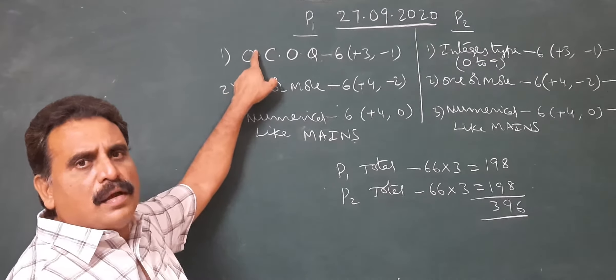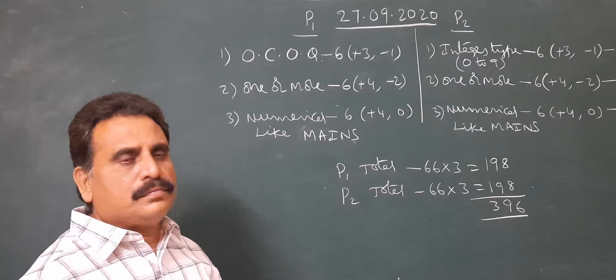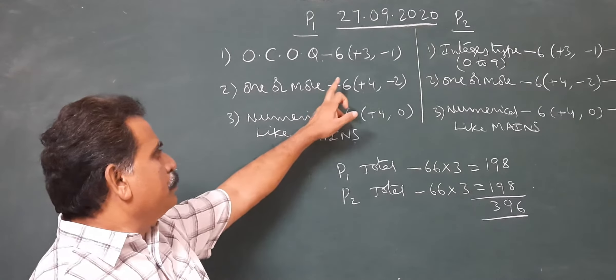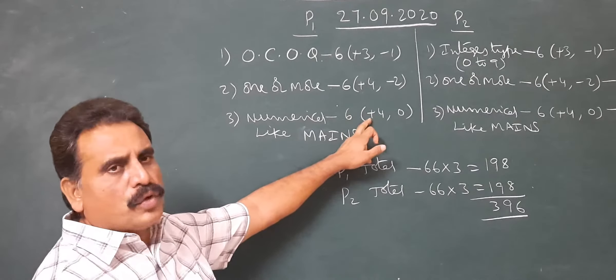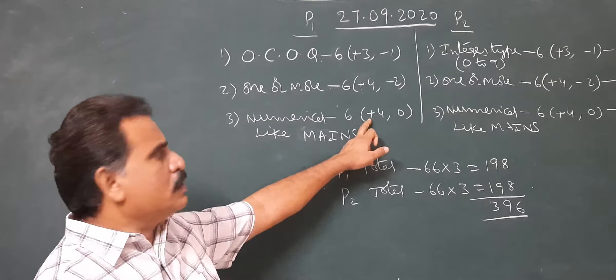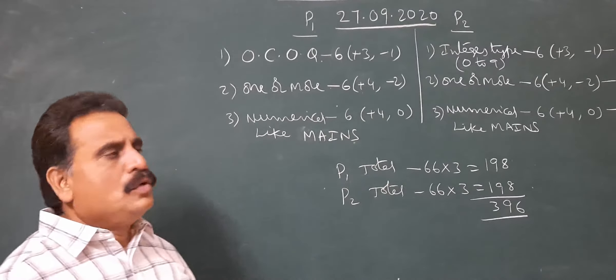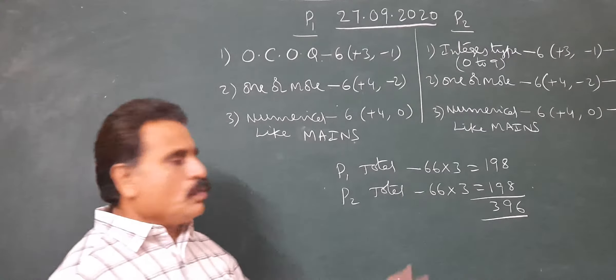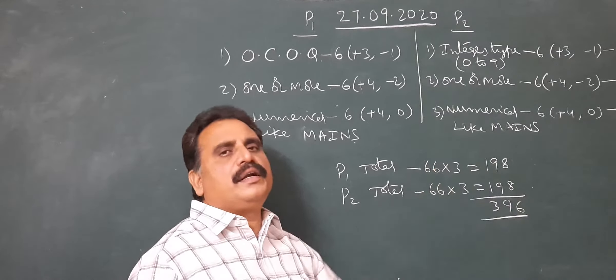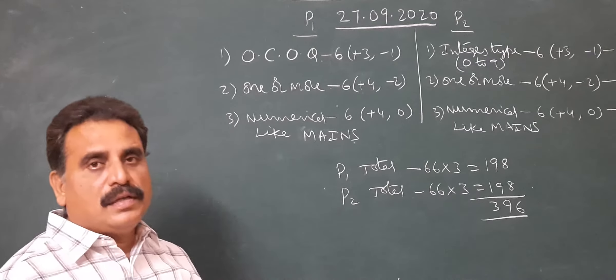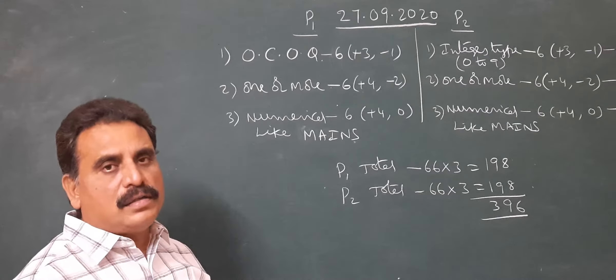So first section maximum marks: six into three equals 18 marks. Second section: six into four, 24 maximum marks. Third section: six into four, 24 maximum marks. So together, 18 plus 24 plus 24 equals 66. So mathematics 66 marks, as well as physics and chemistry. Into three, paper one contains 198 marks. This is the pattern of paper one, JEE Advanced.